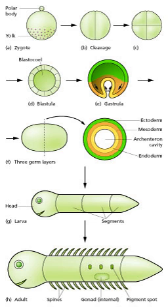Morphogenesis relates to the formation of three-dimensional shape. It mainly involves the orchestrated movements of cell sheets and of individual cells. Morphogenesis is important for creating the three germ layers of the early embryo and for building up complex structures during organ development.